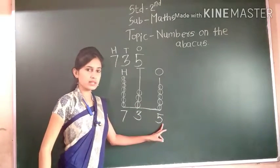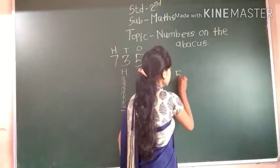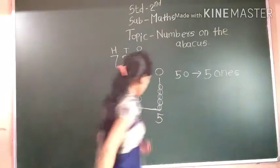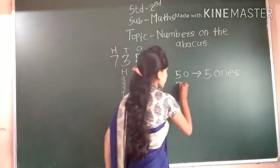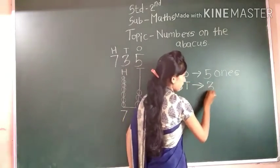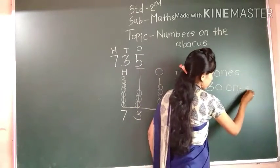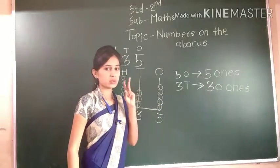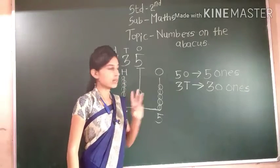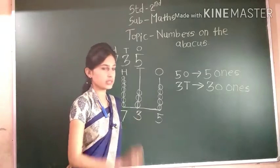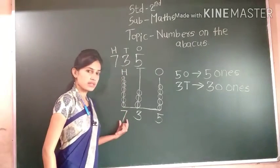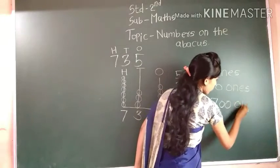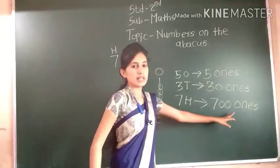What is the place value of 5 ones? The place value of 5 ones is 5. And what is the place value of 3 tens? The place value of 3 tens is 30 ones. We already learned that 10 ones make up 1 ten, 20 ones make up 2 tens, 30 ones make up 3 tens, 40 ones make up 4 tens. What is the place value of 700? The place value of 700 is 700 ones.